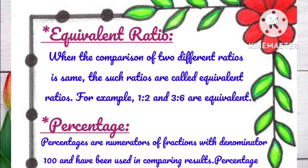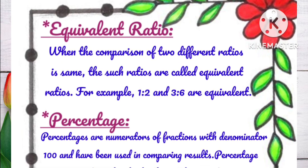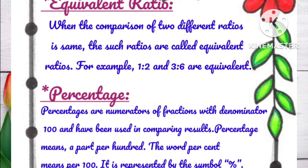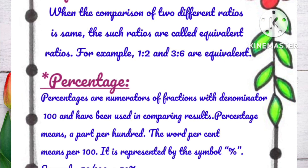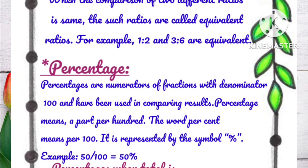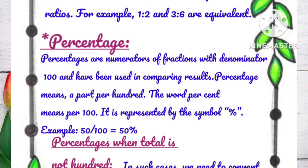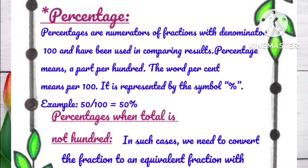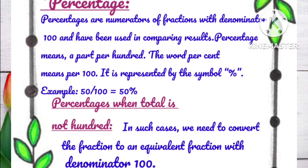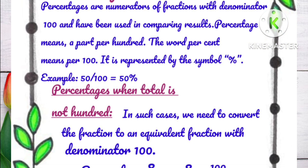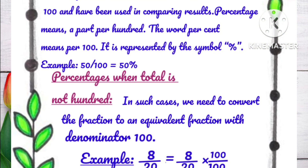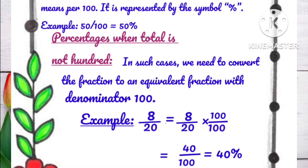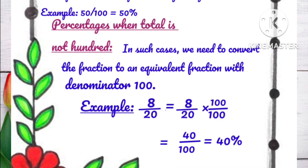On the next page is equivalent ratio and its information. After it, percentage and its information with examples. After it, percentage when total is not 100, its information, and an example.